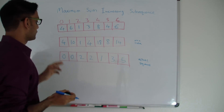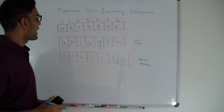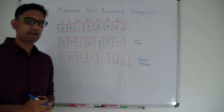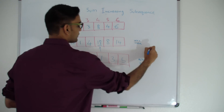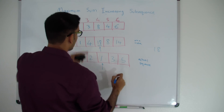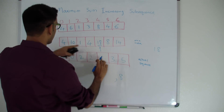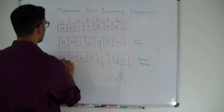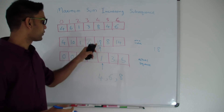Once the array is built, find the maximum value — which is 18. To recover the actual subsequence, use the second array. We know 18 is at index 4 (value 8), so 8 is in the answer. That came from index 1 (value 6), so 6 is in the answer. That came from index 0 (value 4), so 4 is in the answer too. This gives us our maximum increasing sum subsequence: 4, 6, and 8, with a total sum of 18.